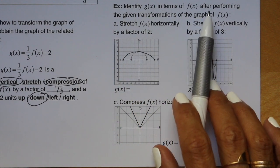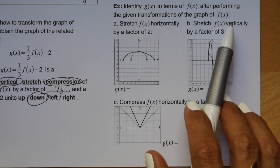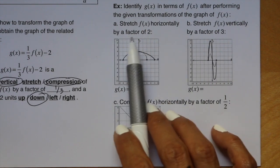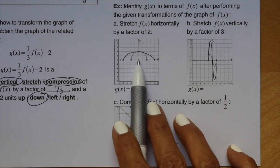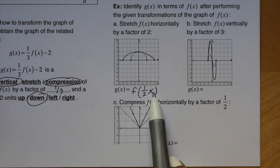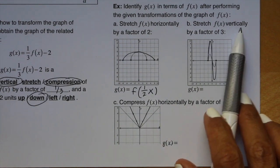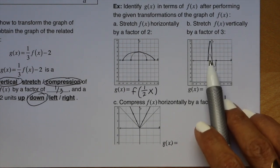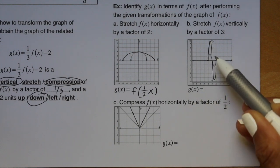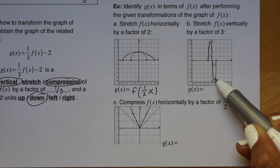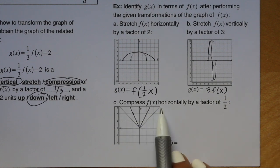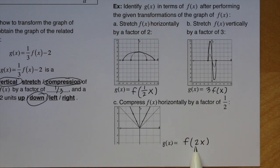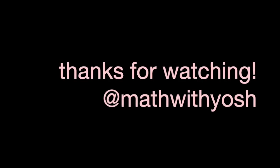This example says: identify g of x in terms of f of x after performing the given transformations. Part A says stretch f of x horizontally by a factor of 2. The points are currently at positive and negative 4; they now go out to 8. Instead of using the number 2, we write 1 half x on the inside of the parentheses. Part B says stretch f of x vertically by a factor of 3 — the number goes on the outside, so we write g of x equals 3 f of x. Finally, compress f of x horizontally by 1 half — working backwards we use the number 2, so g of x equals f of (2x).